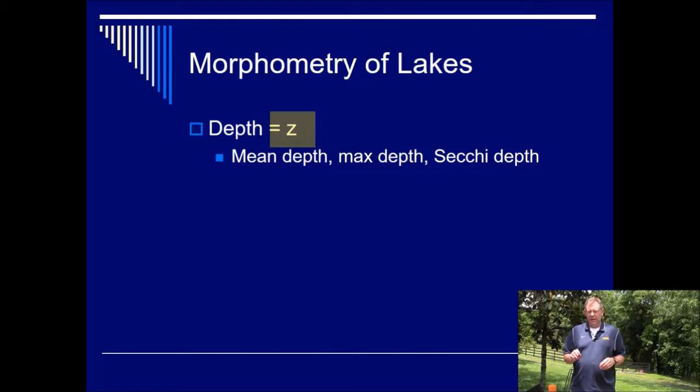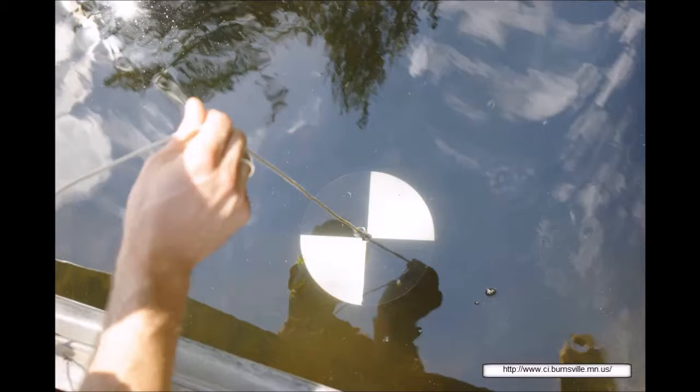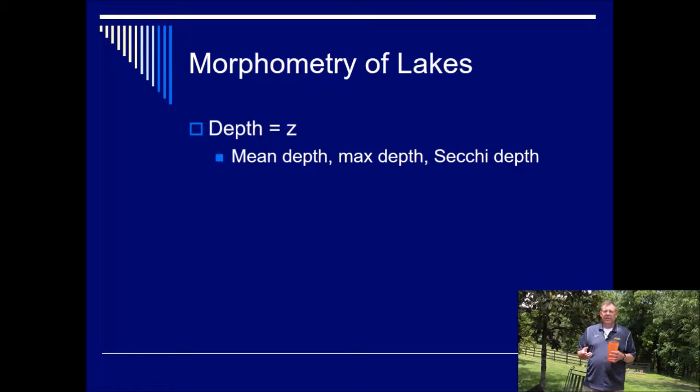Well, depth is pretty easy. In limnology, depth is usually symbolized by the letter Z. So if you see Z, it's talking about depth. We're usually mostly concerned with the mean depth, the maximum depth, and the Secchi depth. The Secchi depth is a measure of water clarity. We'll probably talk about that a little bit later. But there's a thing called a Secchi disc, and here's what one looks like. And you lower the Secchi disc until you can't tell the difference between the black and the white, and that tells you the Secchi depth. And of course, the clearer the water, the deeper the Secchi depth goes.